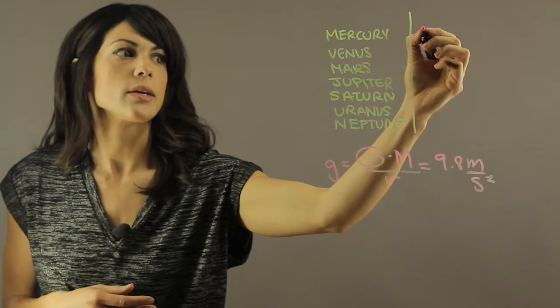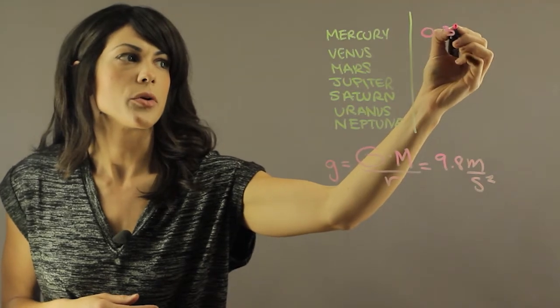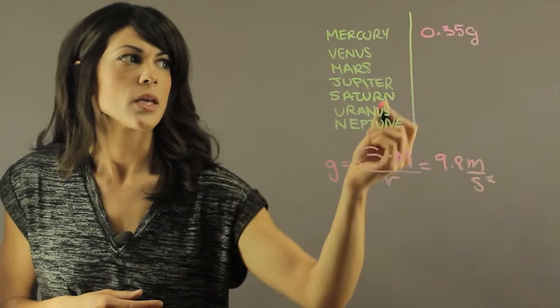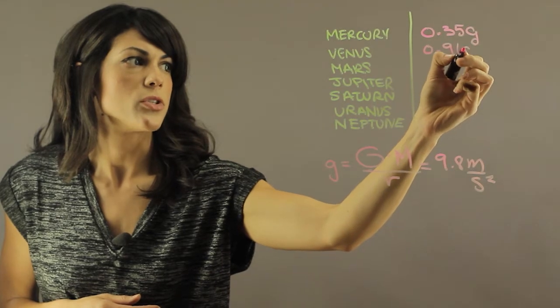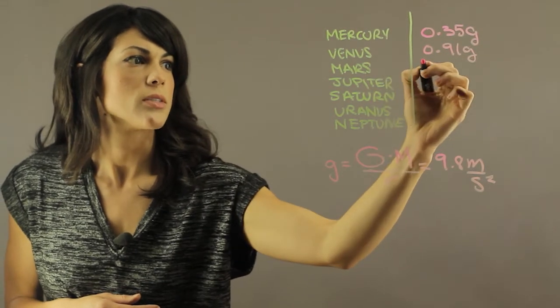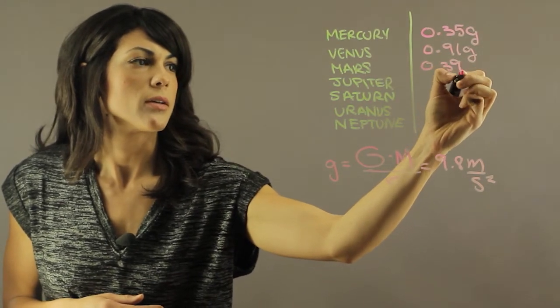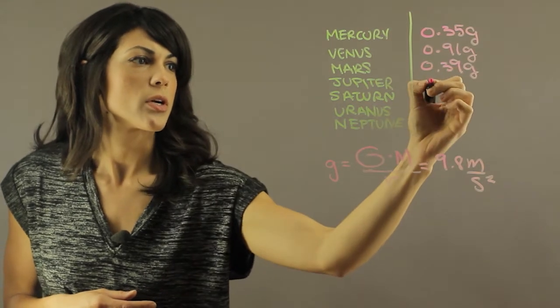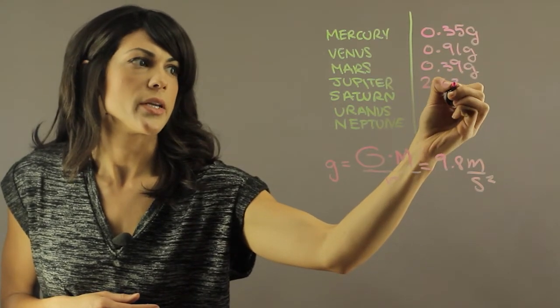So Mercury is 0.35 g, Venus is 0.91 g, Mars is 0.39 g, and Jupiter is 2.63 g.